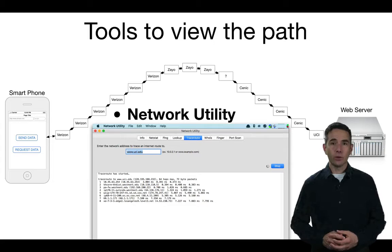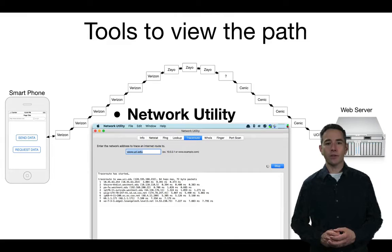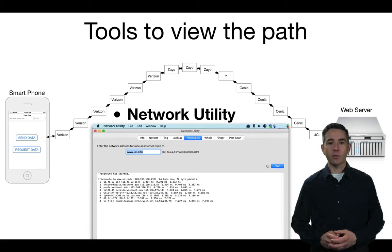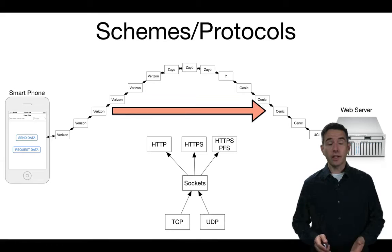Finally, you can use GUI-based tools. On the Mac platform you can use a tool called Network Utility, which has a tab where you can run traceroute. Every platform has a graphical user interface version of these tools; depending on which platform you're working with, you may need to do a little research to find the right one. Under the hood they all use the same technology to find the route from one location to another.